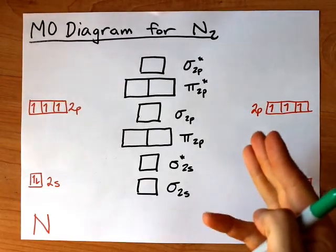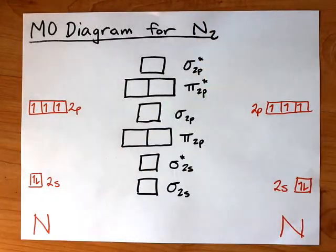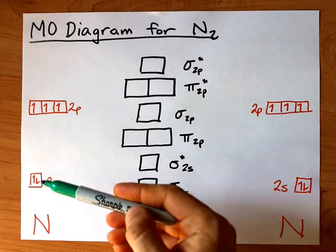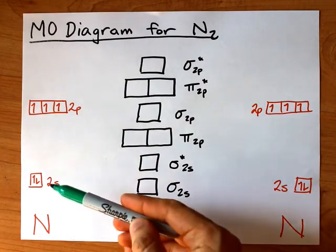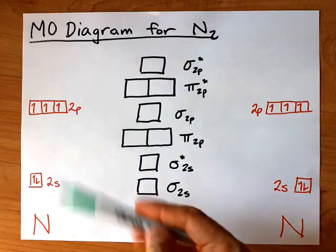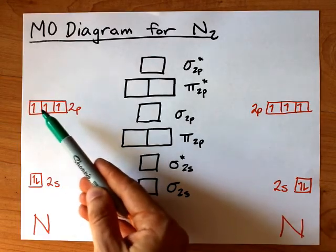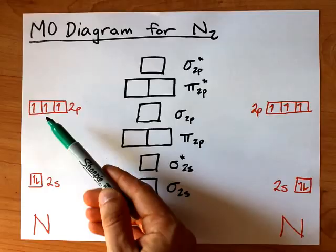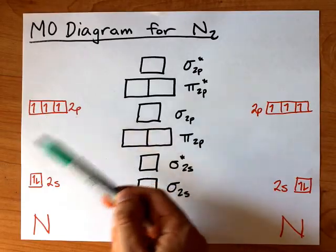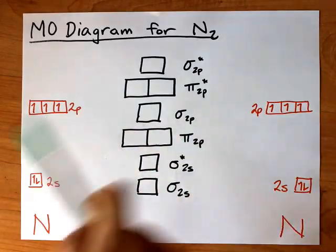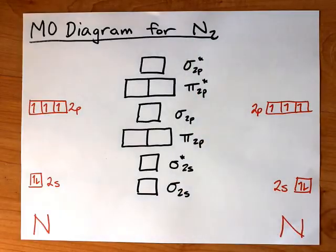Let's draw the molecular orbital diagram for a nitrogen molecule. The nitrogen atoms, on their own, bring five valence electrons. That's two in the 2s atomic orbital and one in each of the three 2p atomic orbitals. That makes ten total, five valence electrons for each nitrogen.